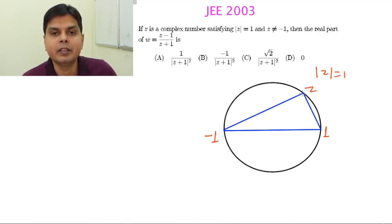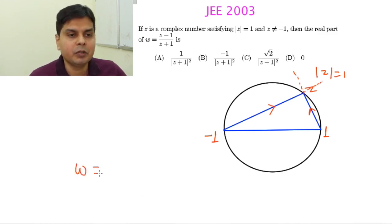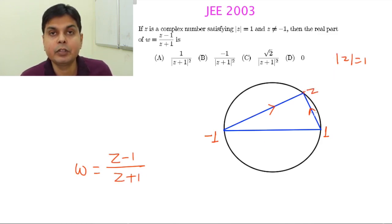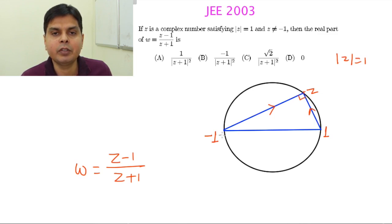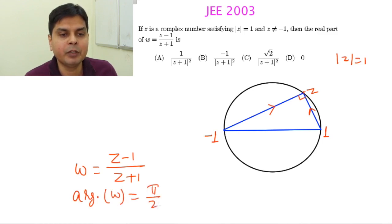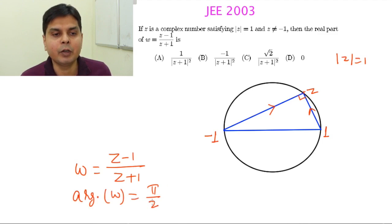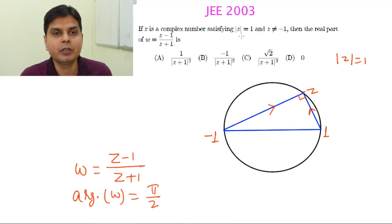So W equals (Z minus 1) by (Z plus 1) involves these two vectors. Since the segment from minus 1 to plus 1 is a diameter of the unit circle, by the inscribed angle theorem, the angle at point Z between vectors Z minus 1 and Z plus 1 is 90 degrees. Therefore the argument of W is π/2. Since the argument is π/2, cos(π/2) equals 0, so the real part is 0. This is a very elegant geometric method.